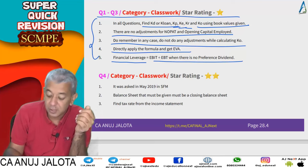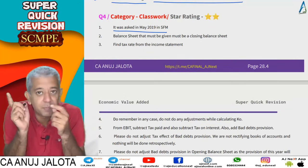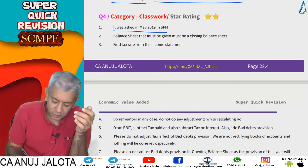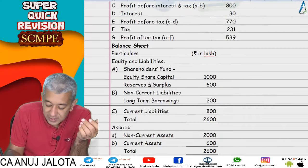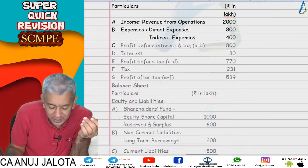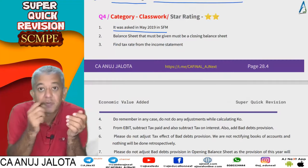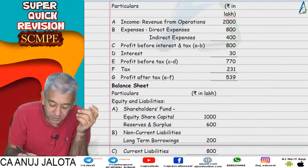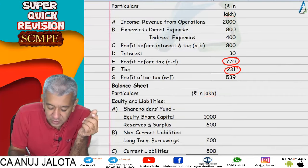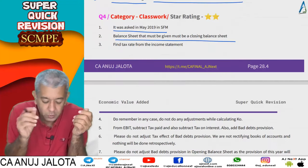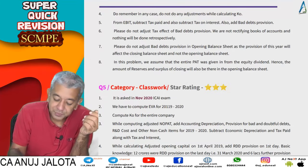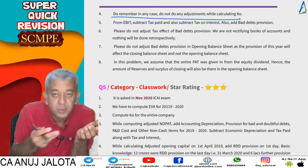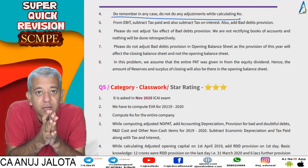Question number four was asked in the SFM paper in May 2019 — I think it was the first question of that paper. The balance sheet given is the closing balance sheet, which is the default. But what we always require is the opening capital employed. From the income statement, find out the tax rate — it comes to 30 percent. Once that is done, do not do any adjustments when computing Ko.